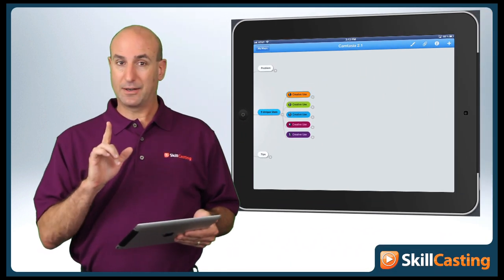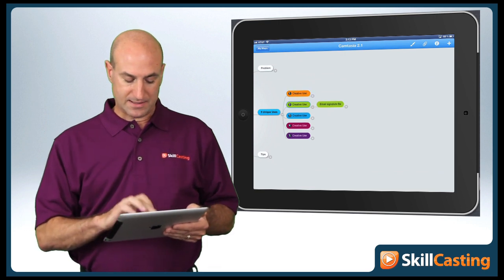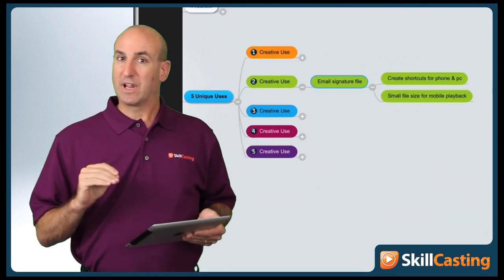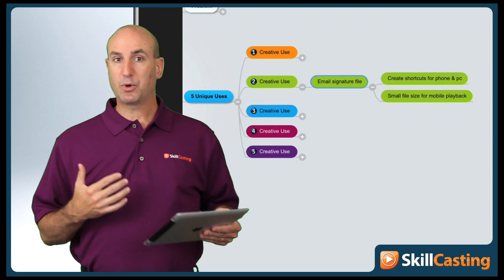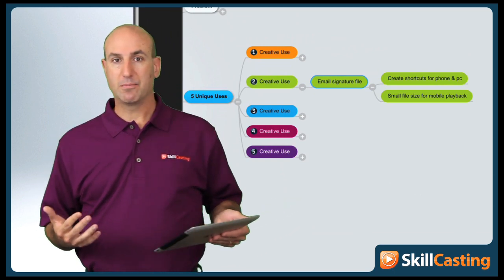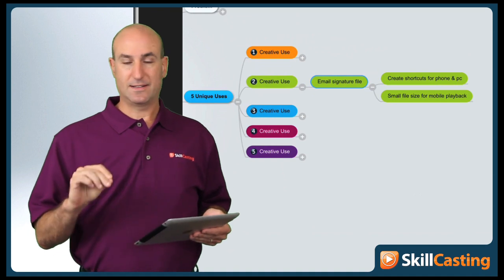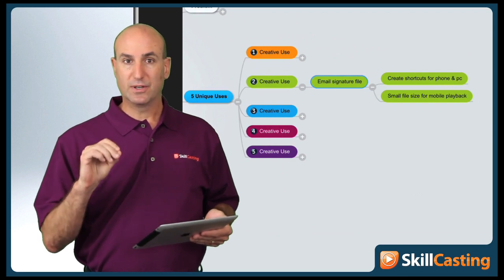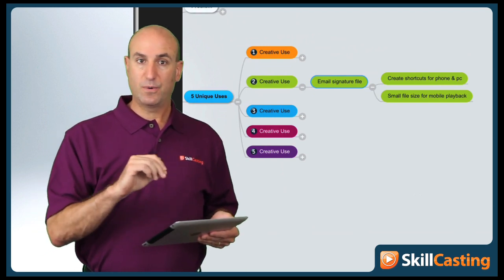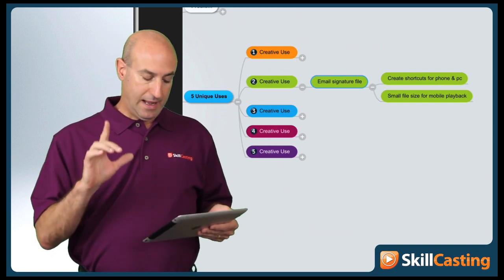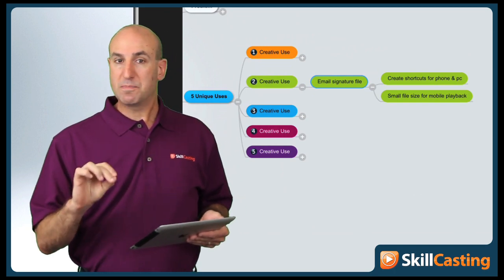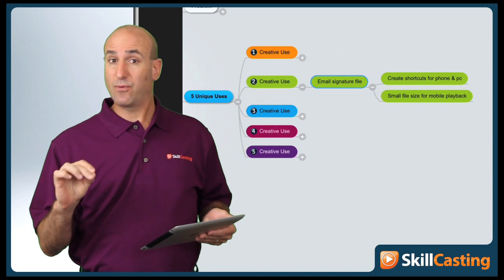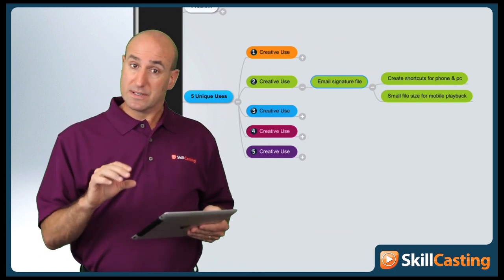The second unique and creative use, and I've talked to this with some people I'm working with now, is creating a video email signature. In other words, go ahead and create your video, superimpose yourself over your presentation — a lot like what I'm doing — and then embed a link to that video in your email signature. Create shortcuts so you can quickly enter your signature on your phone or on your PC. Because people may be taking a look at this with their mobile devices, you might want to create a small 640 by 360 video.